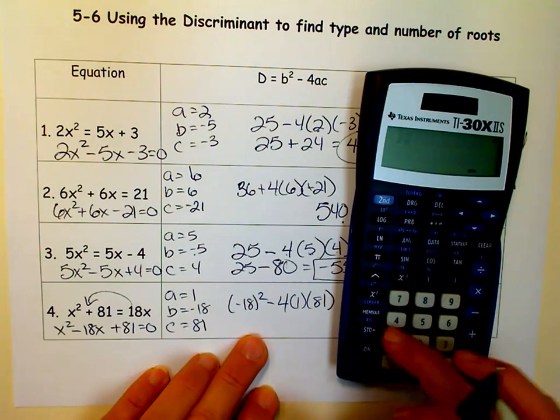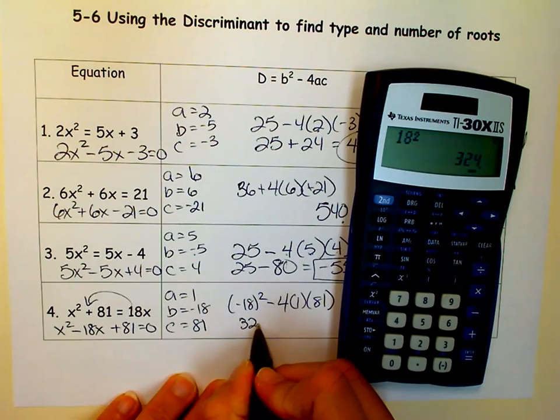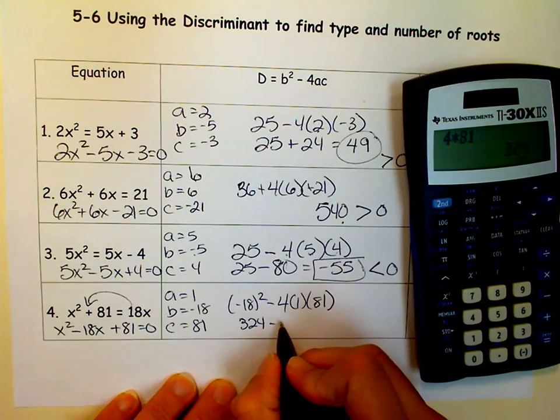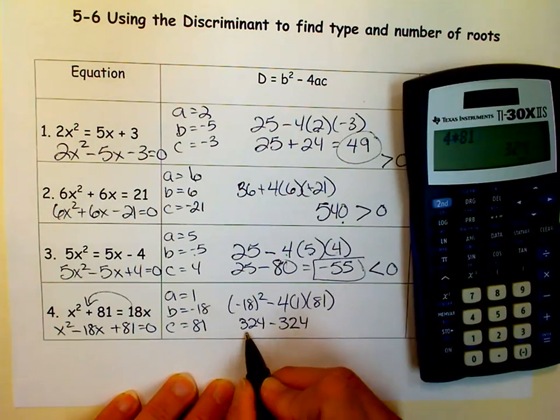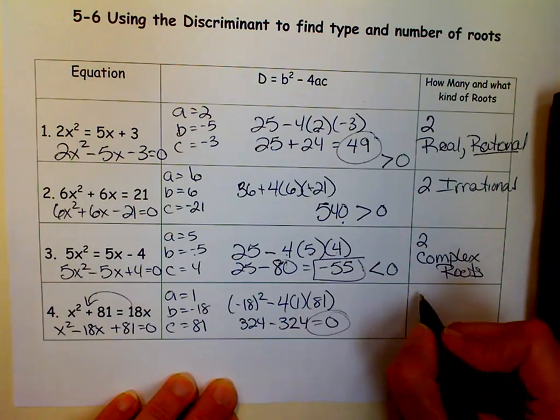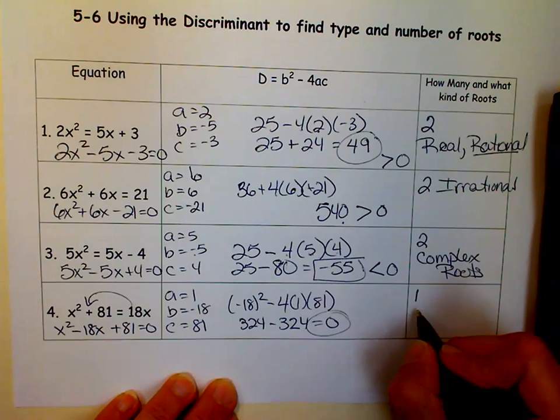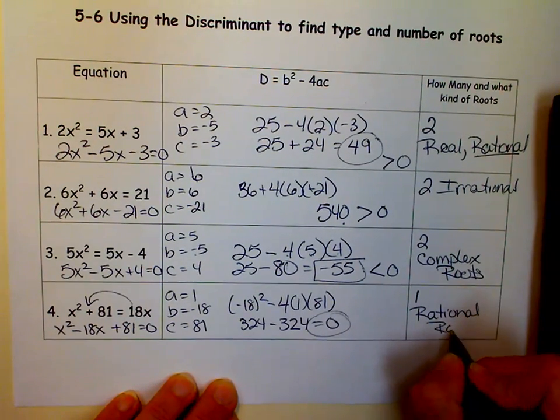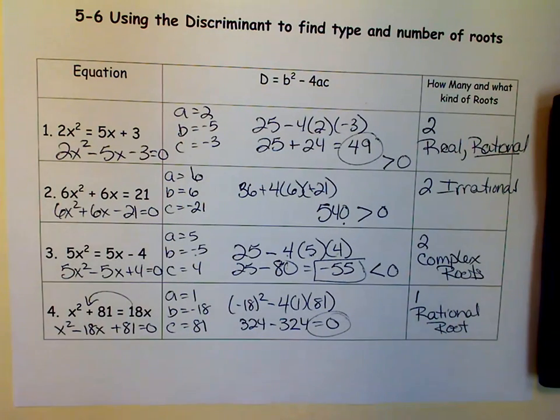And 18 squared is 324. And 4 times 81 is also 324. So we get 324 minus 324, which is 0. So when my discriminant equals 0, I have one root, and I know it's a rational root.